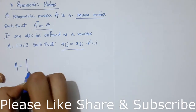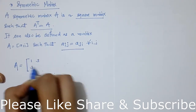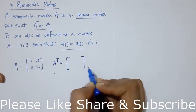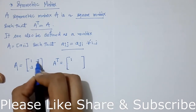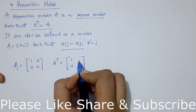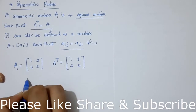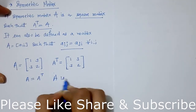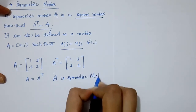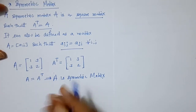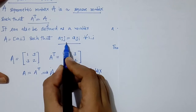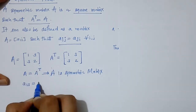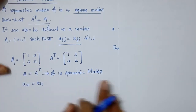Let's take an example. We have matrix A with given elements and find its transpose by changing rows into columns: first row into first column, second row into second column. Observe that we get A equal to A transpose, so this matrix A is a symmetric matrix. We can verify that A_ij equals A_ji — for example, A_13 is equal to A_31.